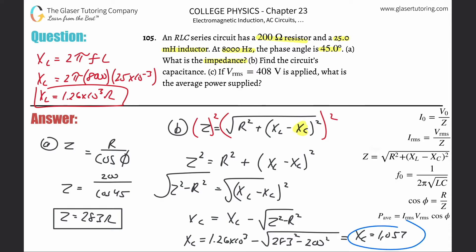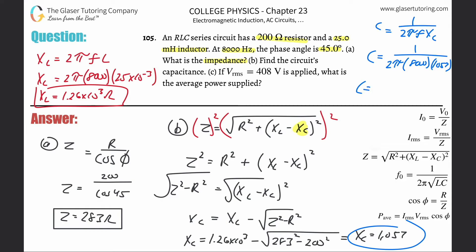Now, X_C equals 1 divided by (2π × frequency × capacitance). Solving for capacitance: C = 1 divided by (2π × 8000 × 1057). Plugging that in gives about 1.88 × 10⁻⁸ farads, which is about 18 to 19 nanofarads. That's letter b.